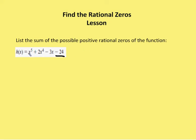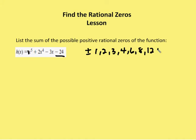The factors of the leading coefficient are the coefficient in front of the term with the highest degree exponent, which in this case is just one. So the factors of the constant are going to be plus or minus one, two, three, four, six, eight, twelve, and twenty-four. And the factors of the leading coefficient are going to be one.